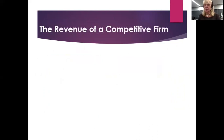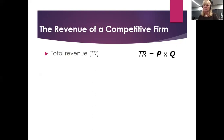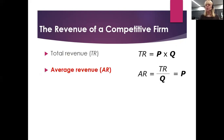So how does that look on the revenue side? Total revenue equals price times quantity — how many did you sell and what did you get for them? If I'm selling lemonade at a dollar a glass and sell 10 glasses, that's $10 total revenue. In a perfectly competitive market, average revenue — total revenue divided by quantity — equals price.